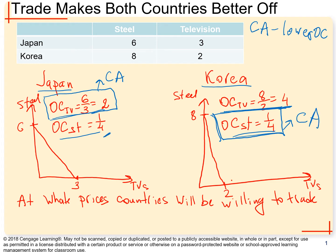So what does this mean for Japan and Korea? It means that Japan should specialize only in production of TVs, and Korea should specialize only in production of units of steel. Now we need to answer a question: at what prices are countries going to benefit from trade?